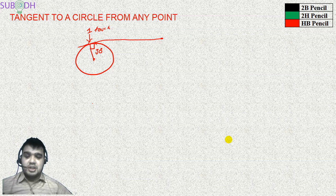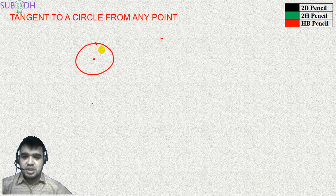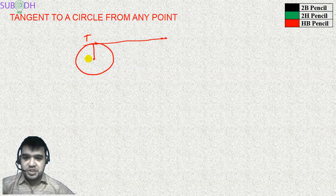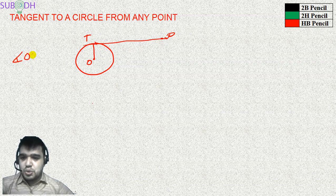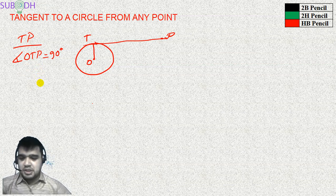Let us properly learn how to do this. Our point is outside the circle and we want to draw a tangent to it. Let's assume this is our tangent — assume it is already drawn. Now, if we join the radius to the point of tangency T, the angle OTP must be 90 degrees. That is the first logic: for a line to be tangent, the radius at the point of tangency must be perpendicular to it.